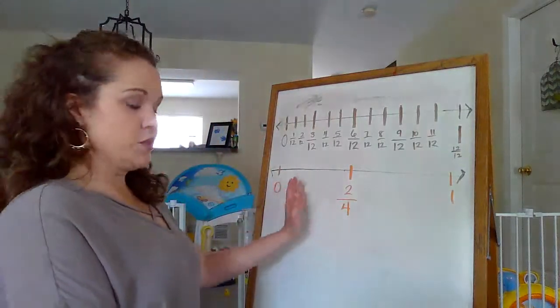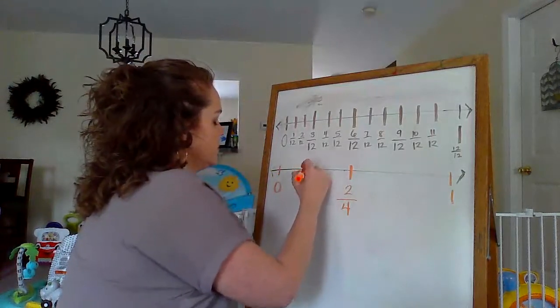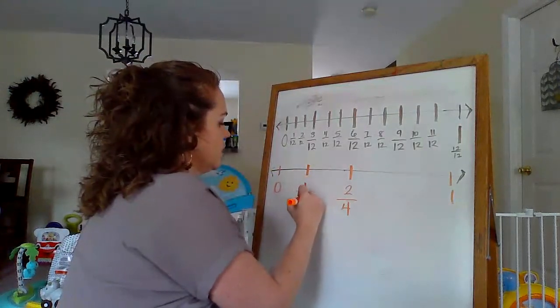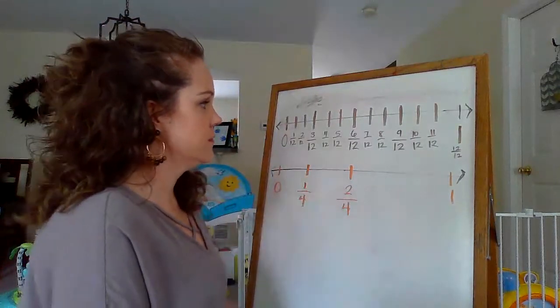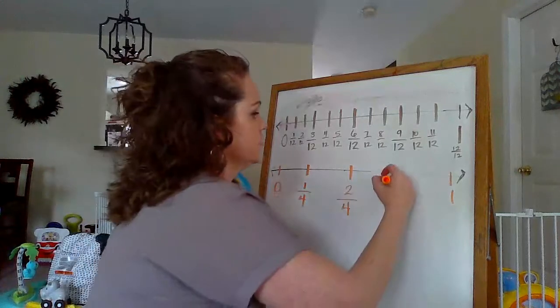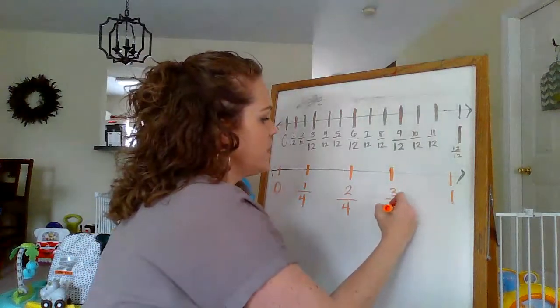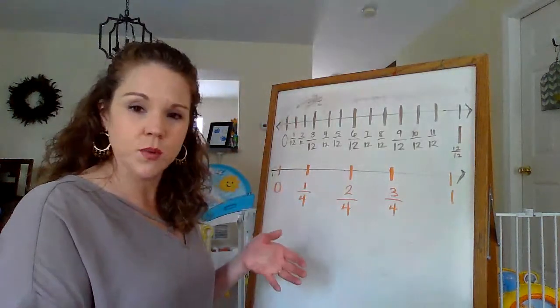So before 2 fourths, I know I must have 1 fourth. So I'm going to put it right in the middle point. And then over here, I know that after 2 fourths, it's got to be 3 fourths, right? Okay. So I'm going to put it right over here.